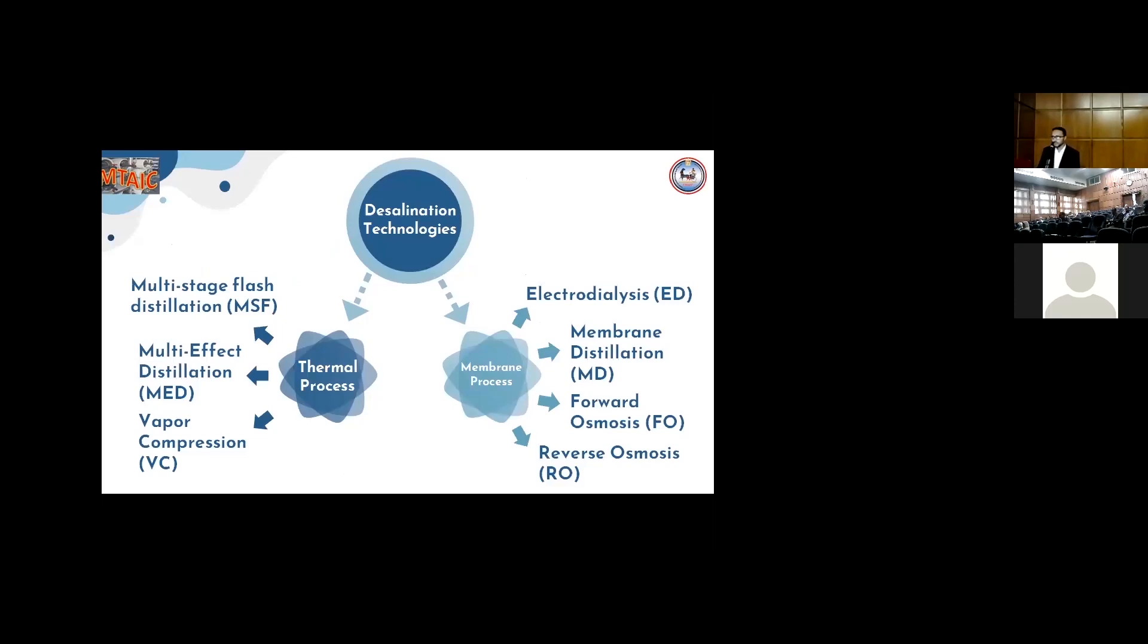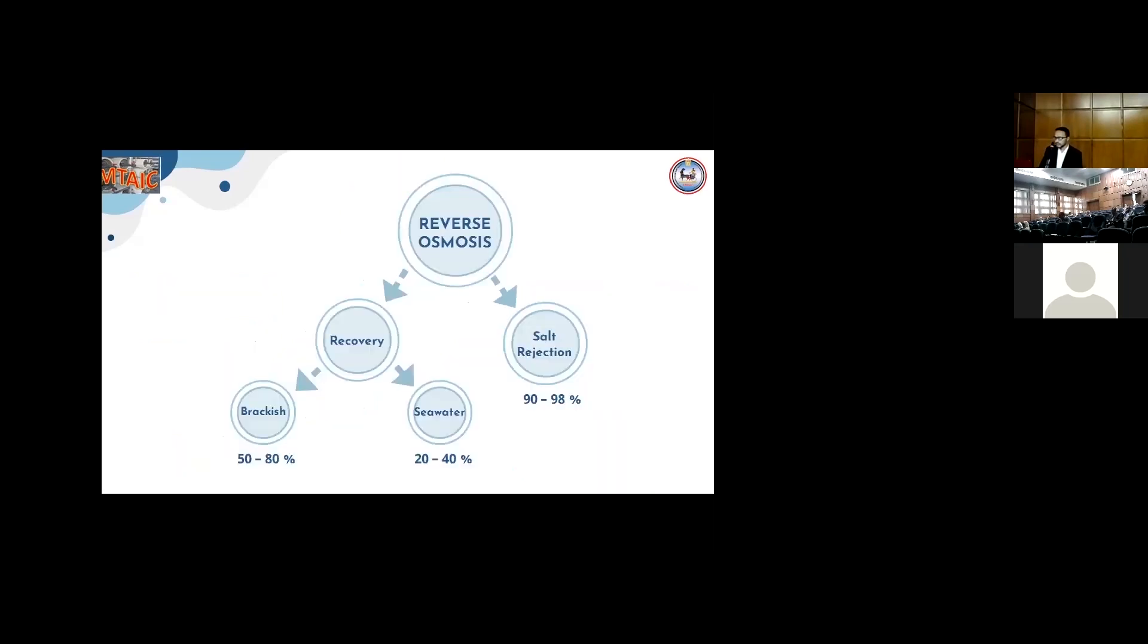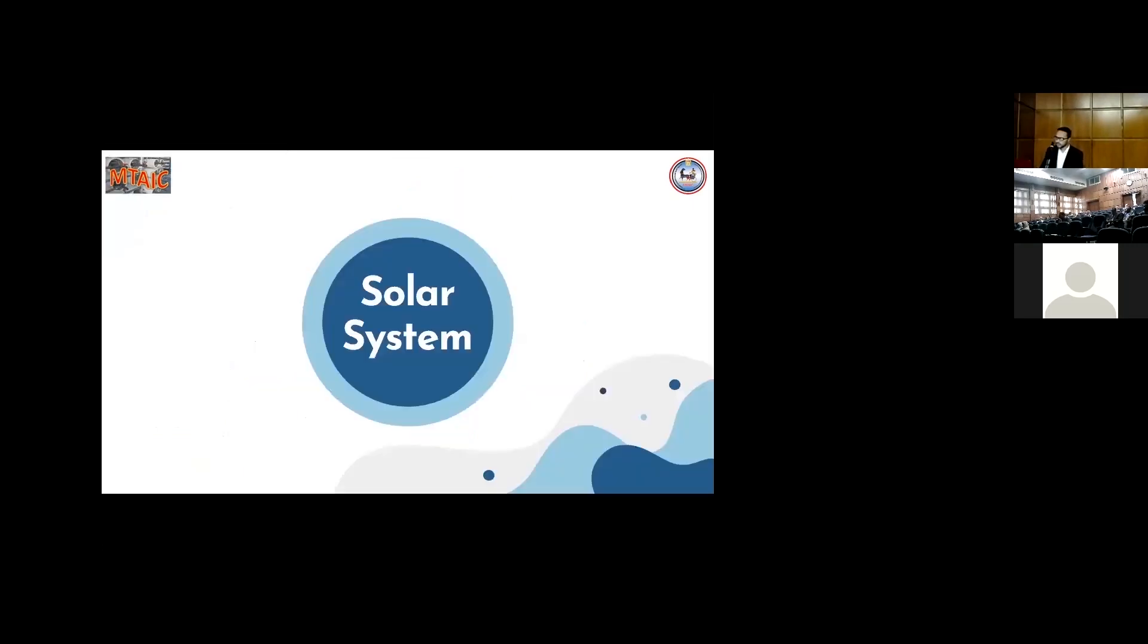The membrane process is preferred over the thermal process due to the higher operating costs and fixed costs. The RO has lower energy consumption, and overall is suitable for this freshwater desalination. The reverse osmosis has recovery from 50% to 80% in fresh water and from 20% to 40% in sea water, with salt rejection from 90% to 98%. However, the RO needs power that can be provided by solar system.